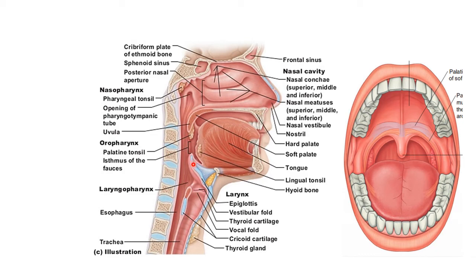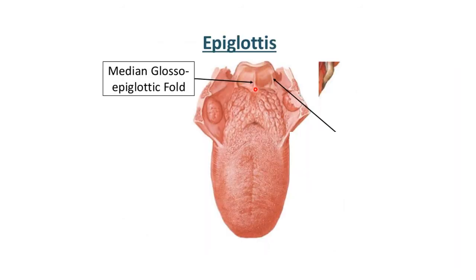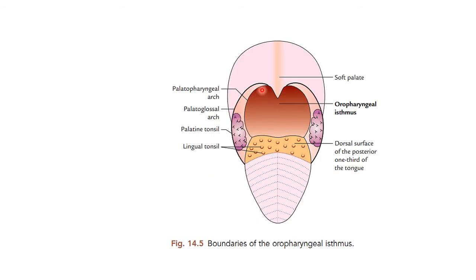There is the upper free end of the epiglottis behind the tongue and there are two folds — the median and lateral glossoepiglottic folds — connecting the anterior surface and the edges of the epiglottis to the tongue. The epiglottic valleculae are shallow fossae between the median and lateral glossoepiglottic folds. The median glossoepiglottic fold and lateral glossoepiglottic folds connect the tongue with the epiglottis.